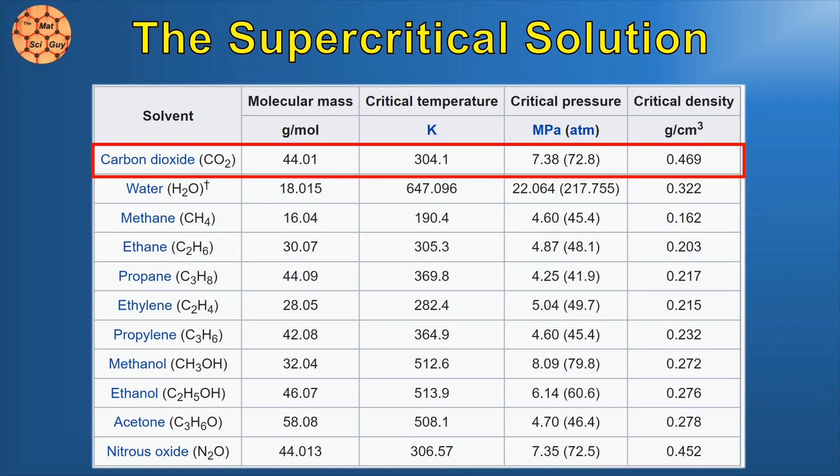Carbon dioxide, by contrast, is much more inert and has a critical temperature that's only 31°C. Liquid CO2 is also miscible with stuff like ethanol and acetone, so a typical drying process might go something like this.